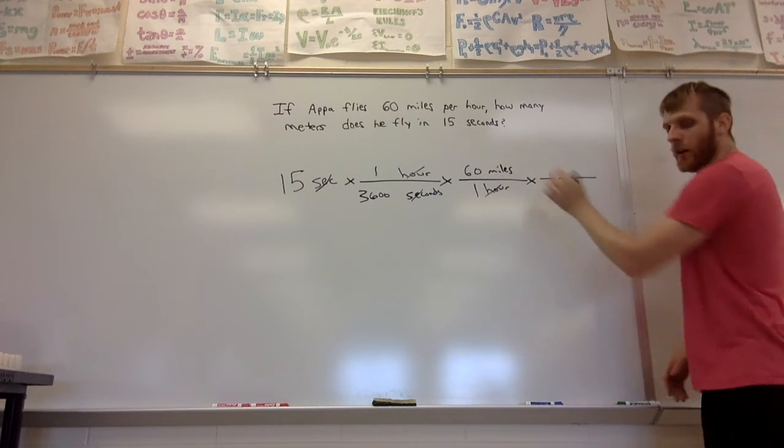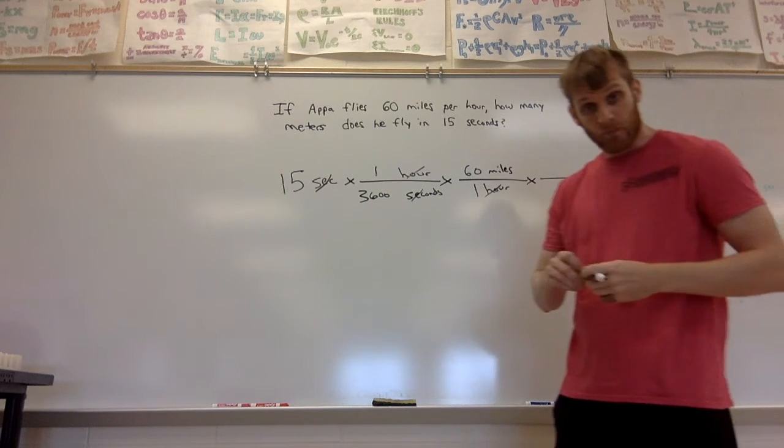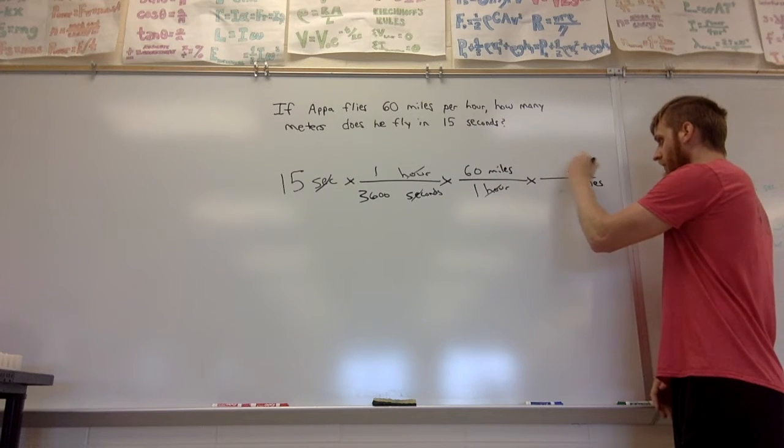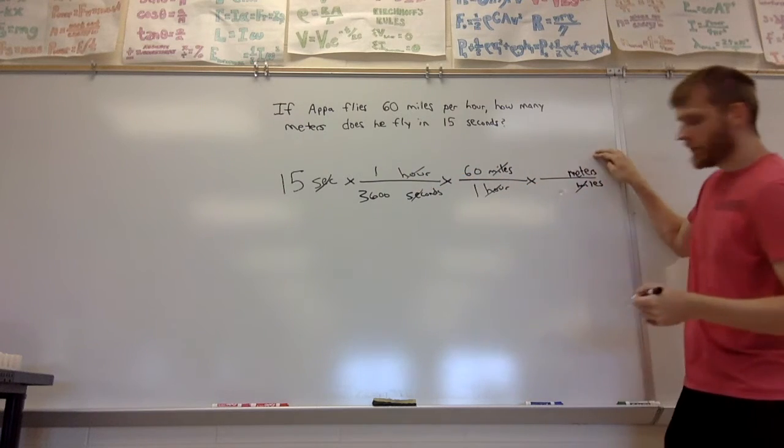I want to get rid of miles, so it goes on the bottom. Then I want meters on top to replace it. Miles cancels with miles, so everything cancels out. The only thing left is meters, which tells me I did it right.